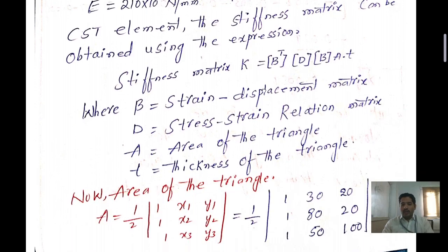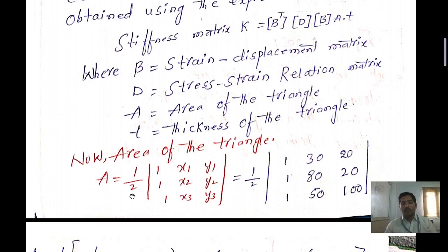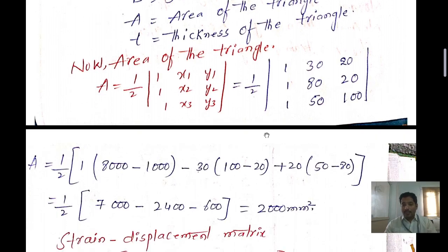First we need to find out the value of A, the area of the triangle element. The formula is A equal to one half times the determinant of the matrix with entries 1, X1, Y1; 1, X2, Y2; 1, X3, Y3. Substituting the known coordinate values using the matrix method.